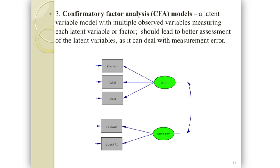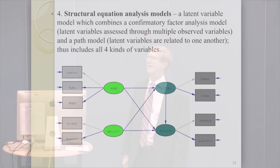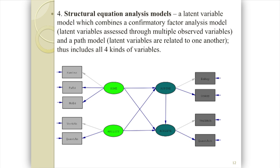We're allowing these two latent variables to be correlated if that's something you think is relevant. When we put all that together, we have a full SEM model with observed variables, latent variables, independent variables, dependent variables, and multiple measures. Now we can take measurement error into account, have multiple measures of each latent variable, and the latent variables can be related to one another in whatever fashion you desire. There's no limit to the complexity.